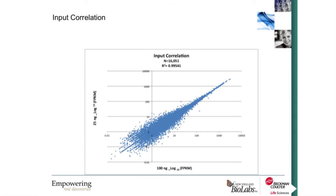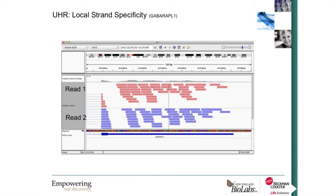Comparing the 25 nanogram and 100 nanogram inputs, FPKM data shows very high correlation between those two libraries regardless of input level. We also looked at local strand specificity using an IGV graph for GAPDH1. In read 1, all reads are oriented one way, and in read 2, all reads point the opposite direction. In a non-stranded library, we would see a roughly even mix of read directionalities. Since we don't see that, we're confident these are highly strand-specific libraries.